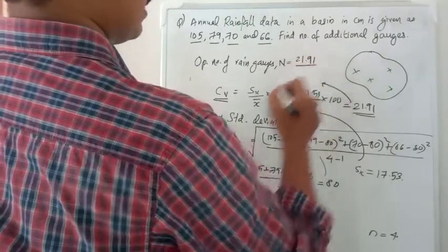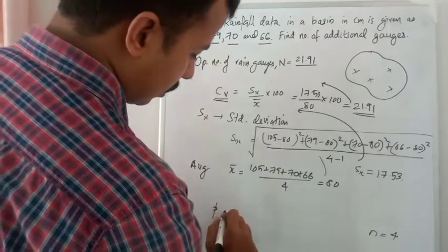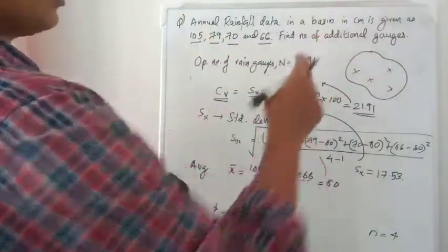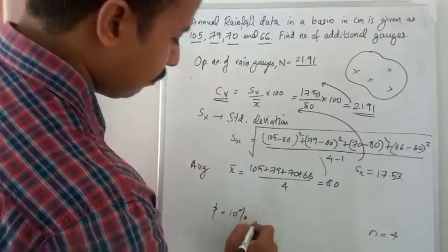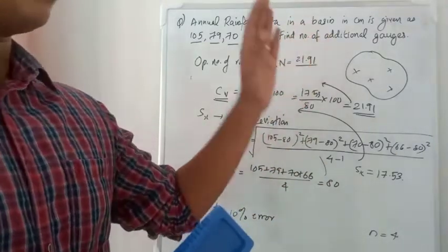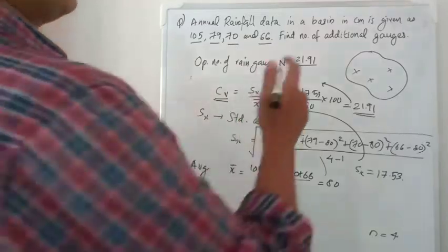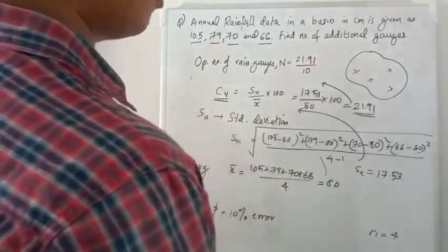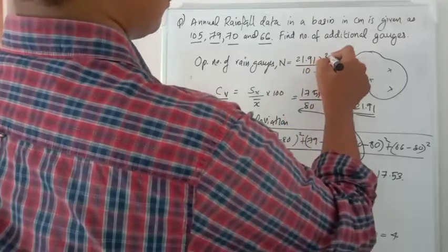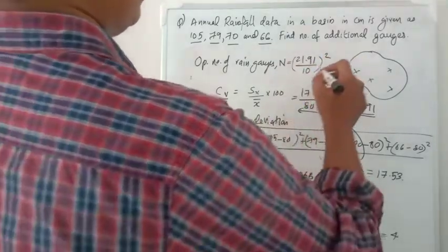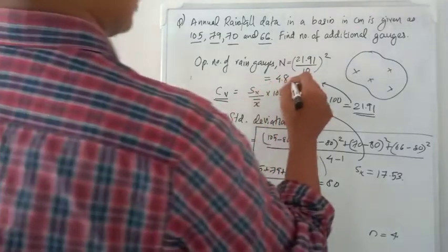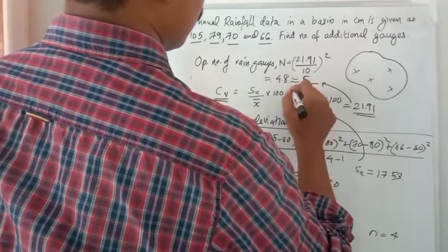Now substituting back: N = (21.91 / P)². P is the allowable error. If P is not given in your question, assume it as 10%. So whenever there is no P value given, just assume 10% error is allowable. Using P = 10: N = (21.91 / 10)² gives you 4.8, which we round up to 5.